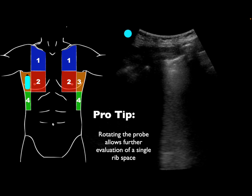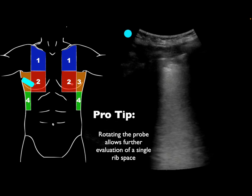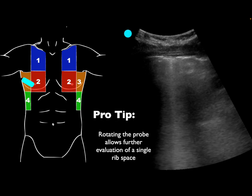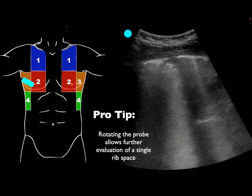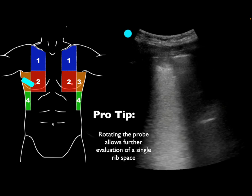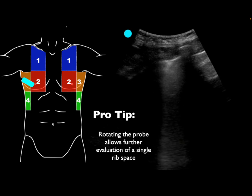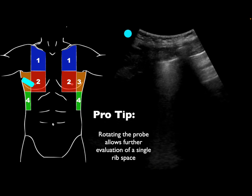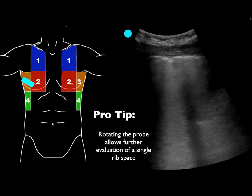Another technique: rotating the probe. When scanning with the probe marker toward the head, you don't fully assess the entire rib space. On the patient's right side, rotate the probe counterclockwise; on the left side, rotate clockwise to align with the rib spaces. As demonstrated in this video, rotating opens up the rib space and reveals a larger area of sub-pleural consolidation and irregular pleural line that wasn't fully visible before. If you find isolated B-lines or a suggestion of an irregular pleural line in a rib space, rotate to further assess.